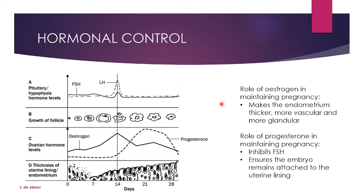The role of estrogen in maintaining pregnancy: it makes the endometrium thicker, more vascular, and more glandular. The role of progesterone: it inhibits FSH. If the ovum is fertilized and progesterone levels keep increasing, FSH will not be produced. High levels of progesterone inhibit FSH, which prevents menstruation from taking place, ensuring the embryo remains attached to the uterine lining and the lining remains attached to the uterus.